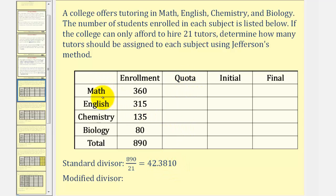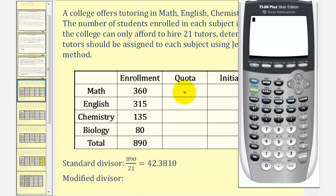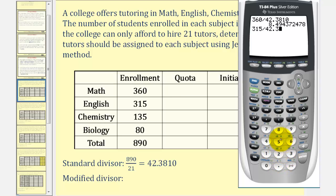Now to find the quota for each subject, we take the enrollment for each subject and divide by our standard divisor. The quota for math would be 360 divided by 42.3810, which is approximately 8.494. The quota for English would be 315 divided by 42.3810, which is approximately 7.433. We would do the same for chemistry and biology.